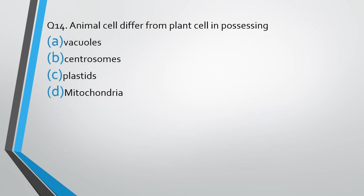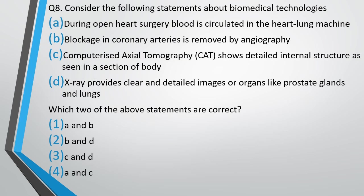Question number 14. The correct answer is option B. Computerized axial tomography shows detailed internal structures as seen in a section of the body.